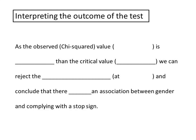Writing this up for the results section of a report might look a bit like this. As the observed value, 9.27, is greater than the critical value, 3.84, we can reject the null hypothesis.